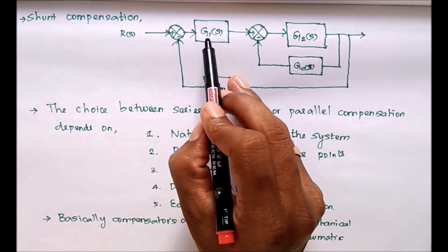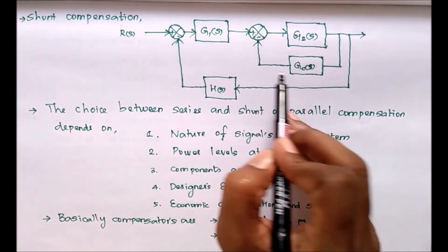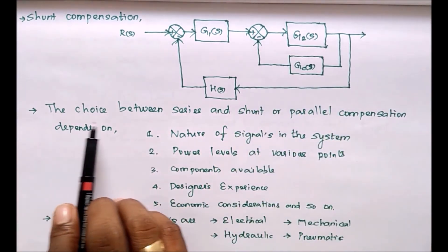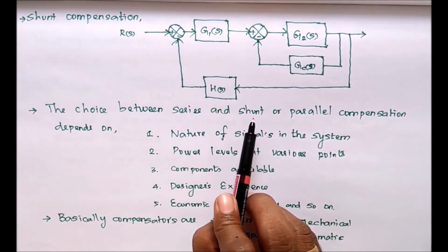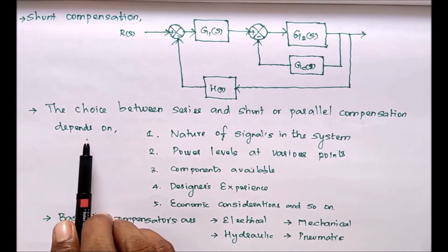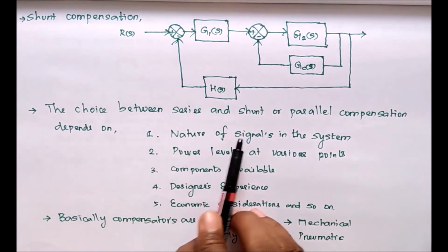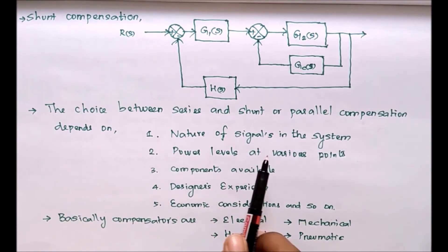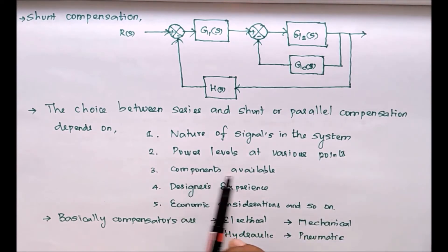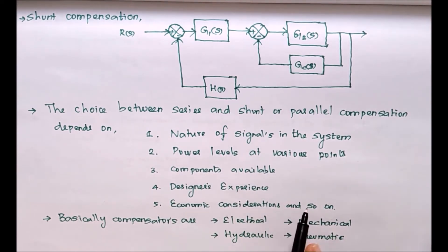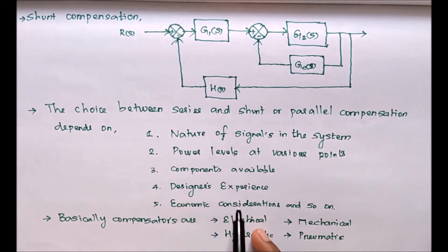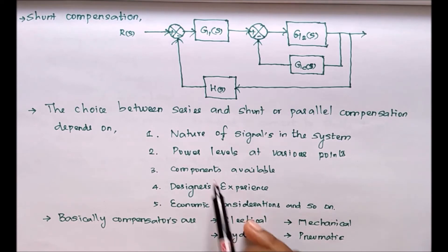The choice between series and shunt compensation depends upon the nature of signal in the system, power levels at various points, components available, designer's experience, economic considerations, and so on. Based on these factors, we can select either a series or parallel compensator to bring the system into a stable region.